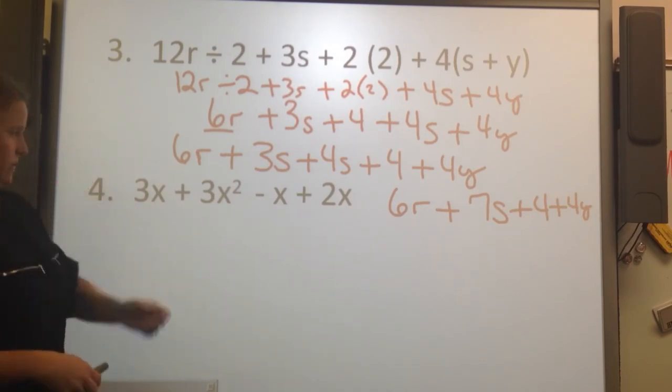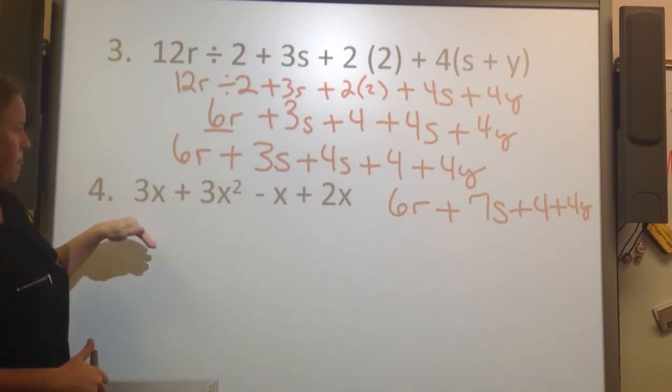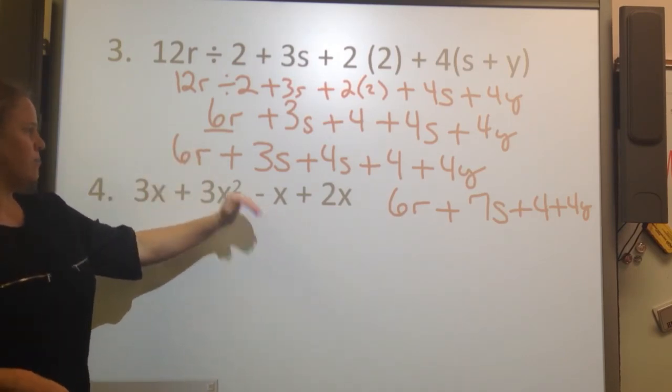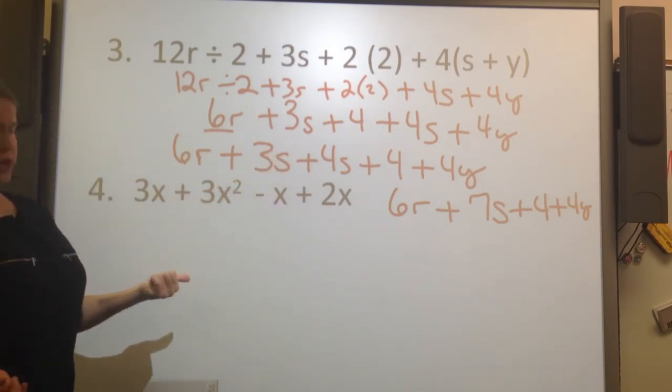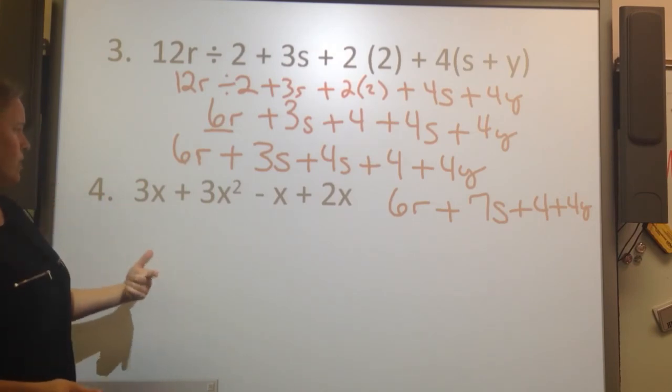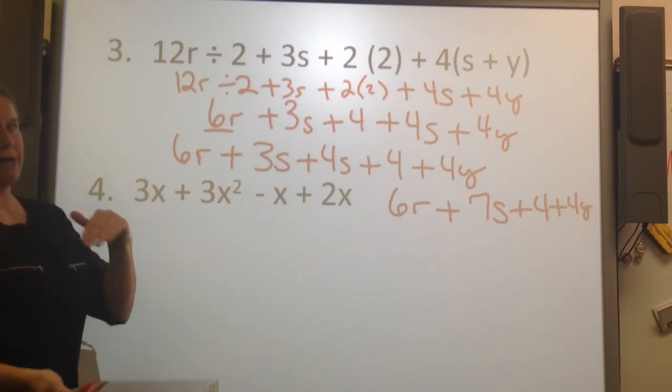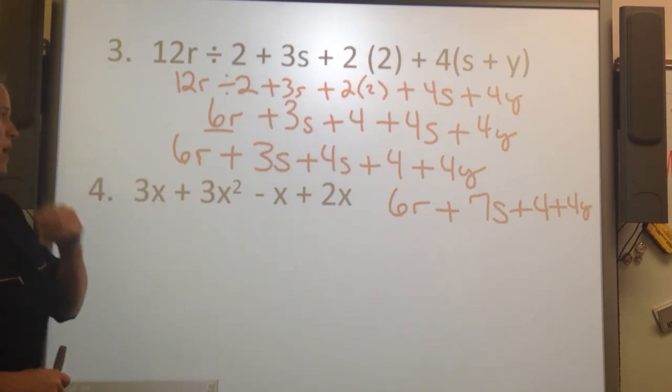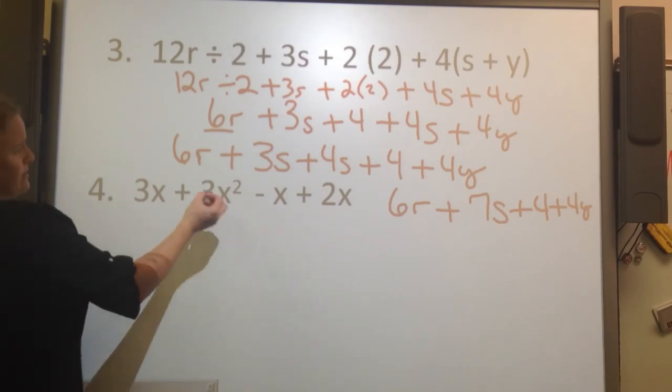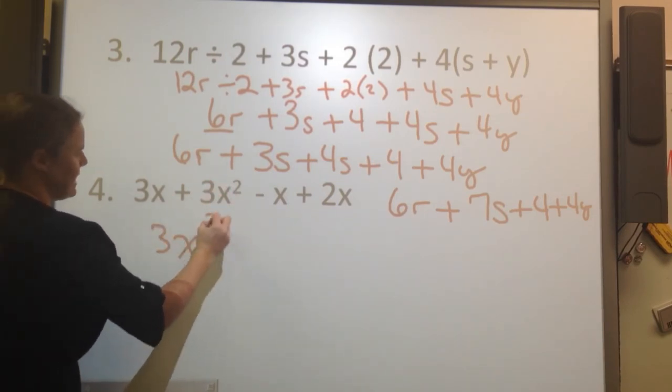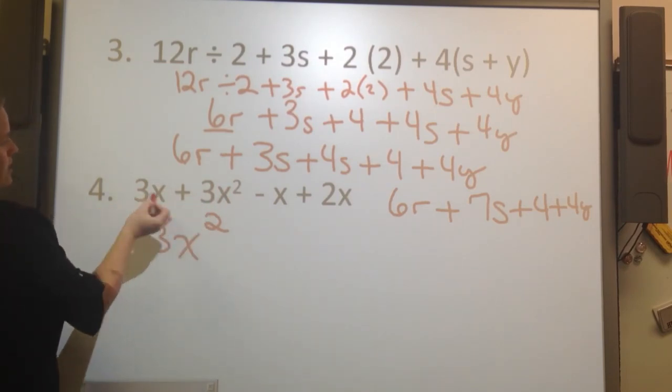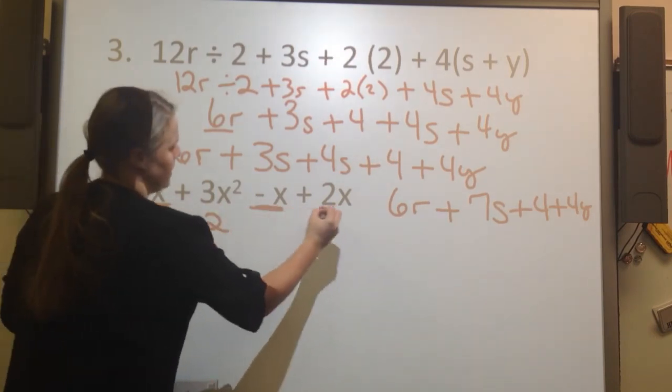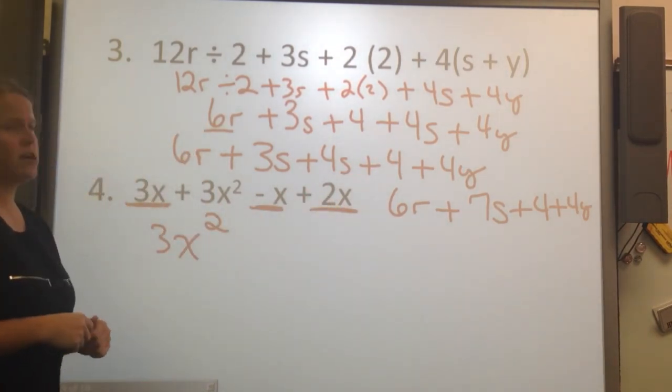One more, you can do it. So this time we have 3x plus 3x squared minus x plus 2x. So this time we don't have any distributing to do. We don't have any real order of operations to follow at this point. It's already been simplified. Now we have to combine my like terms to finish out the problem. So in looking at this, I'm going to go ahead and pull out my 3x squared, because I know there aren't any other of those. And then it looks like I've got a commonality between this one, this one, and this one, because they're all variable x power.